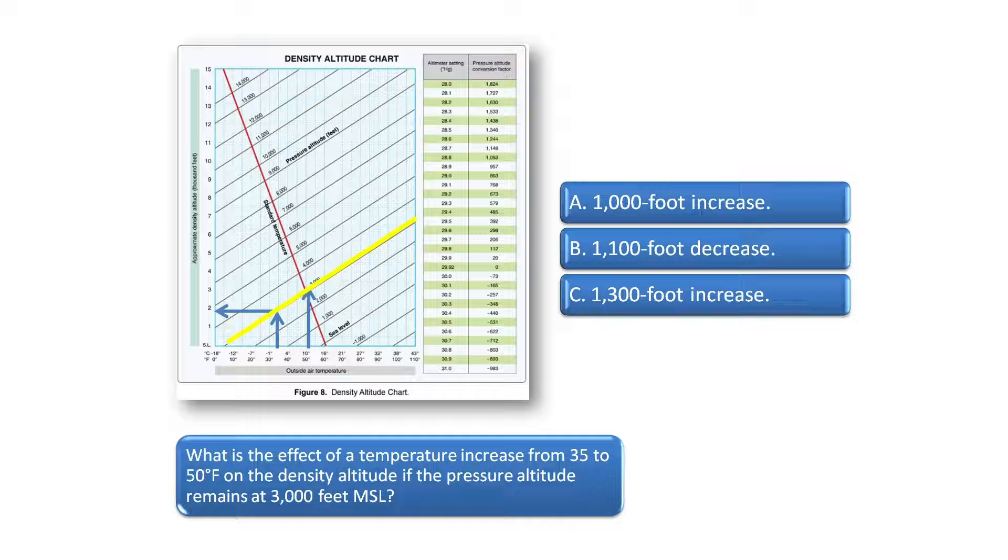Do the same thing at the 50 degree marker and draw a line up to the 3000 foot pressure altitude line and over to the density altitude side of the chart. You can see the density altitude increases to just under 3000 feet at an outside air temperature of 50 degrees.